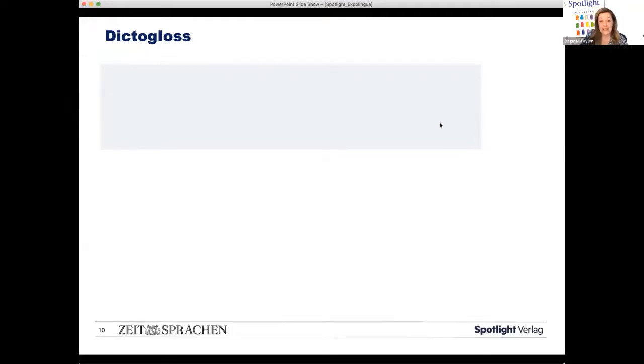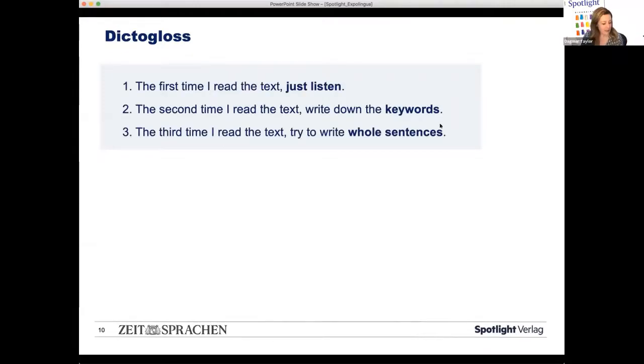OK, we're going to try a dictogloss now. OK, so I'm going to read you a text. And so the instructions are here because I'm going to read it three times. I'm not going to read the complete text. So what you need is a pen, pencil and some paper. And the first time I read the text, I just want you to listen. So no writing, no cheating. The second time I read the text, you're allowed to write down key words or as much as you can. OK, but still listening to the content. And the third time I read the text, I'd like you to try and write whole sentences.